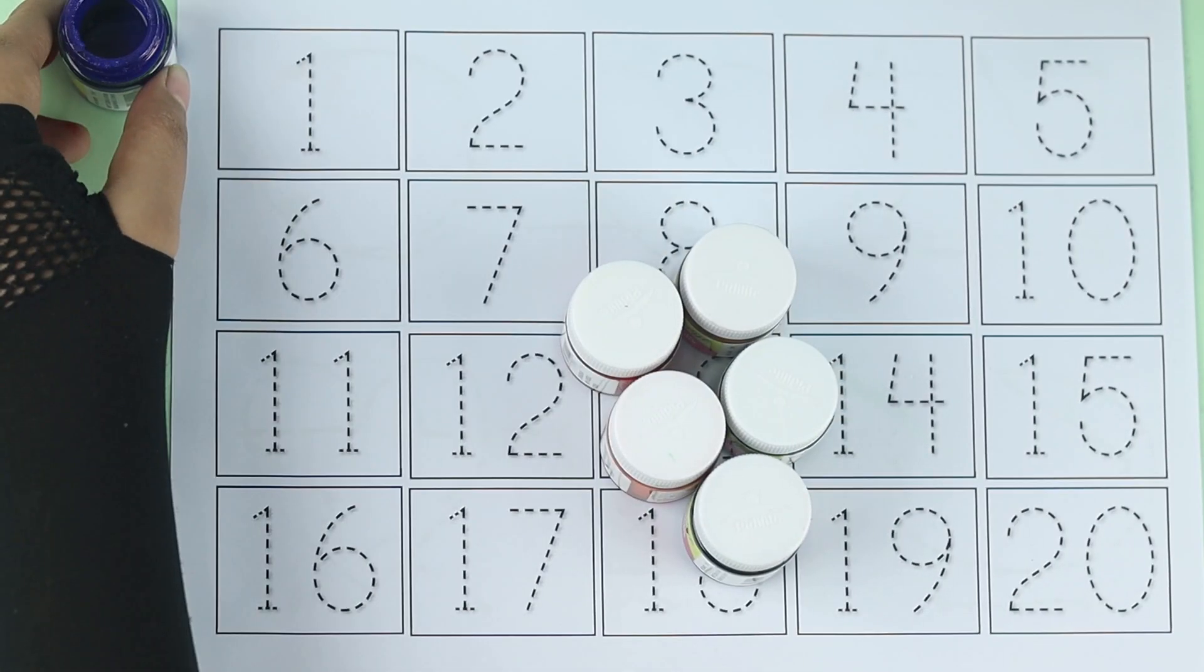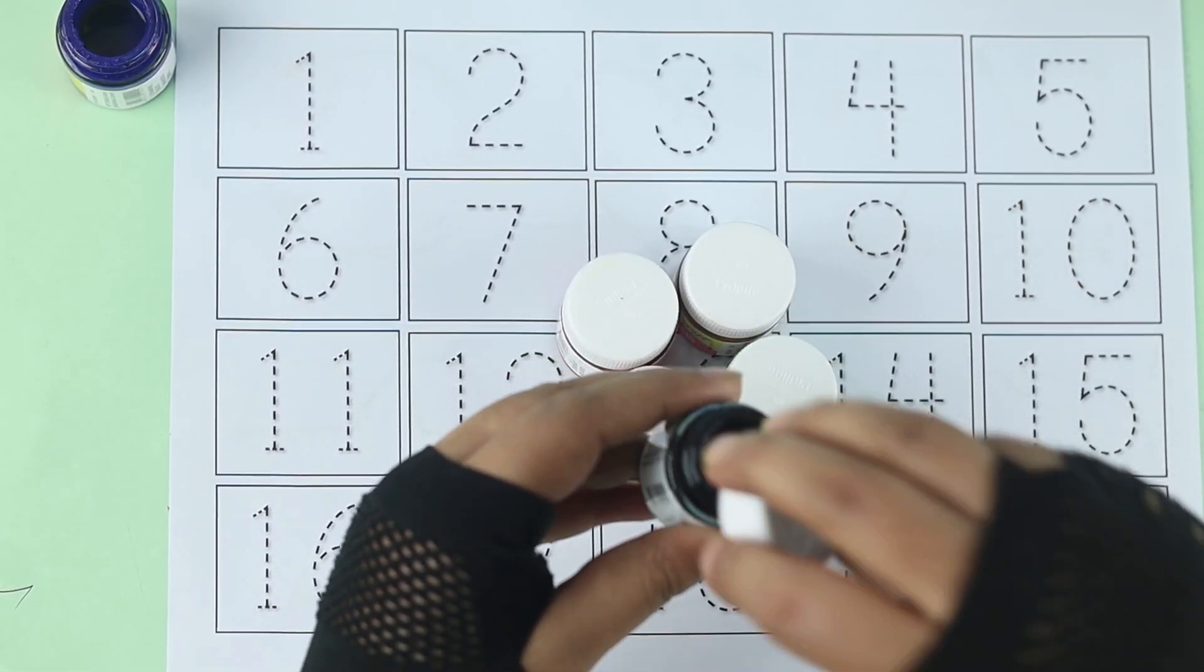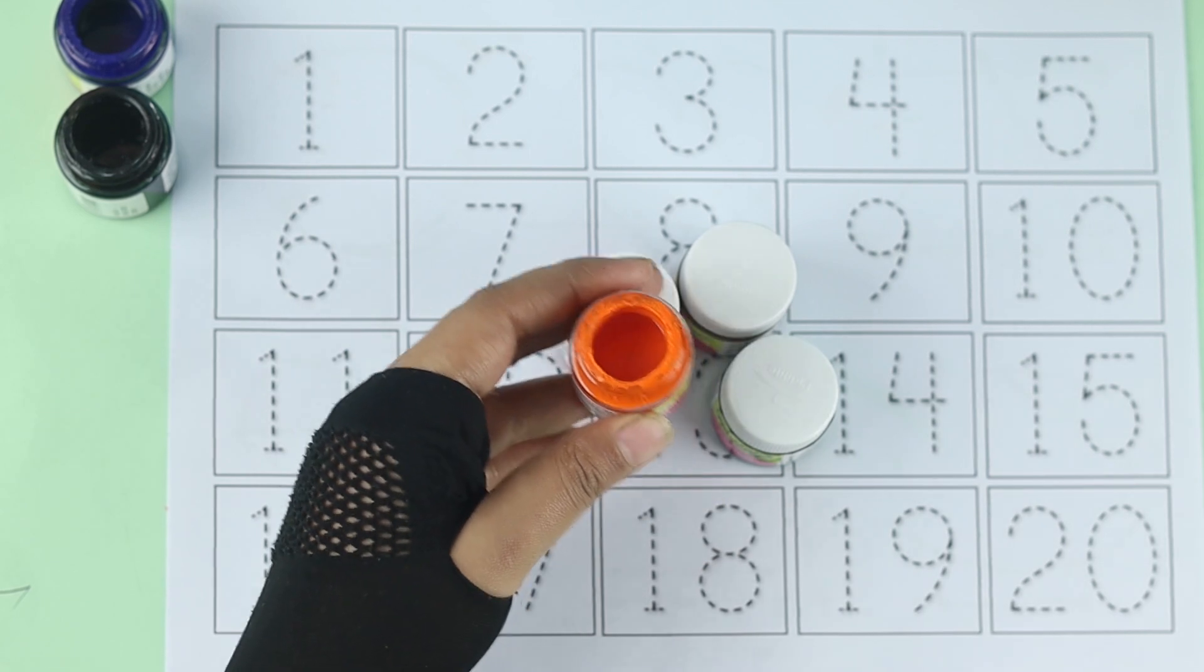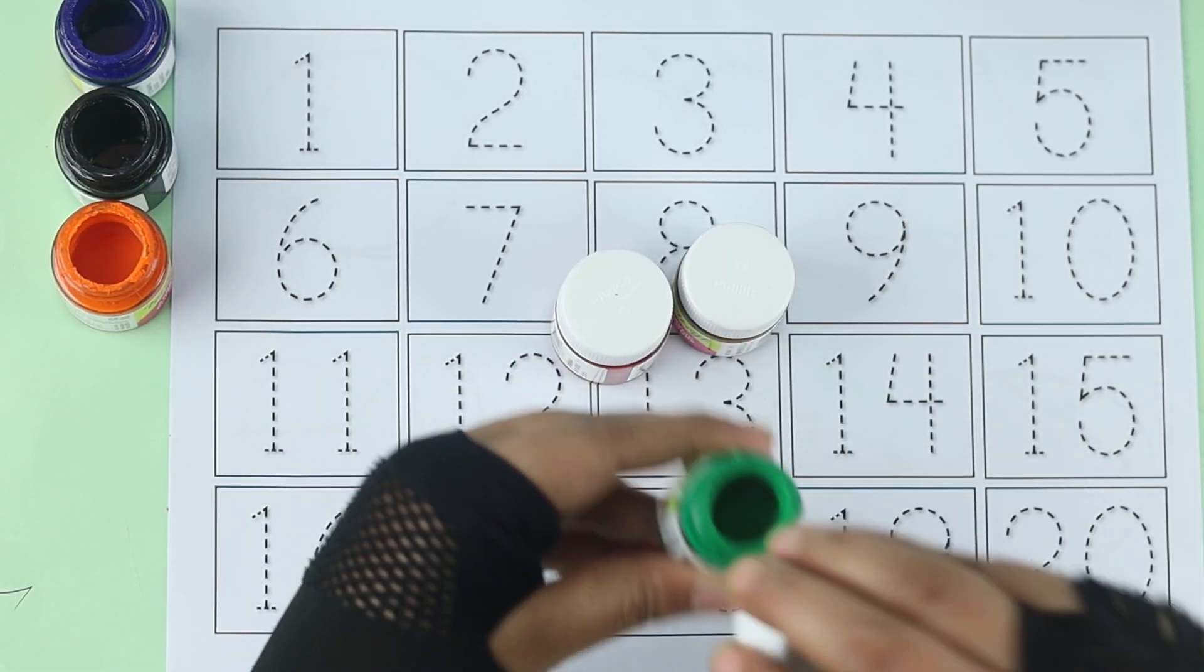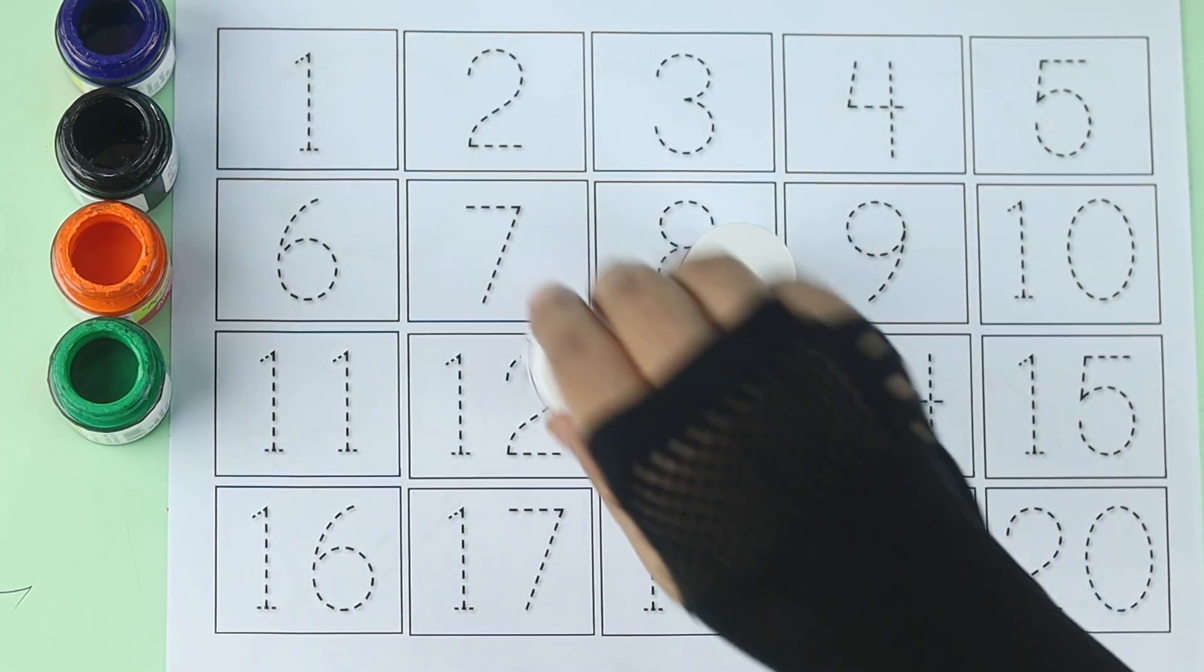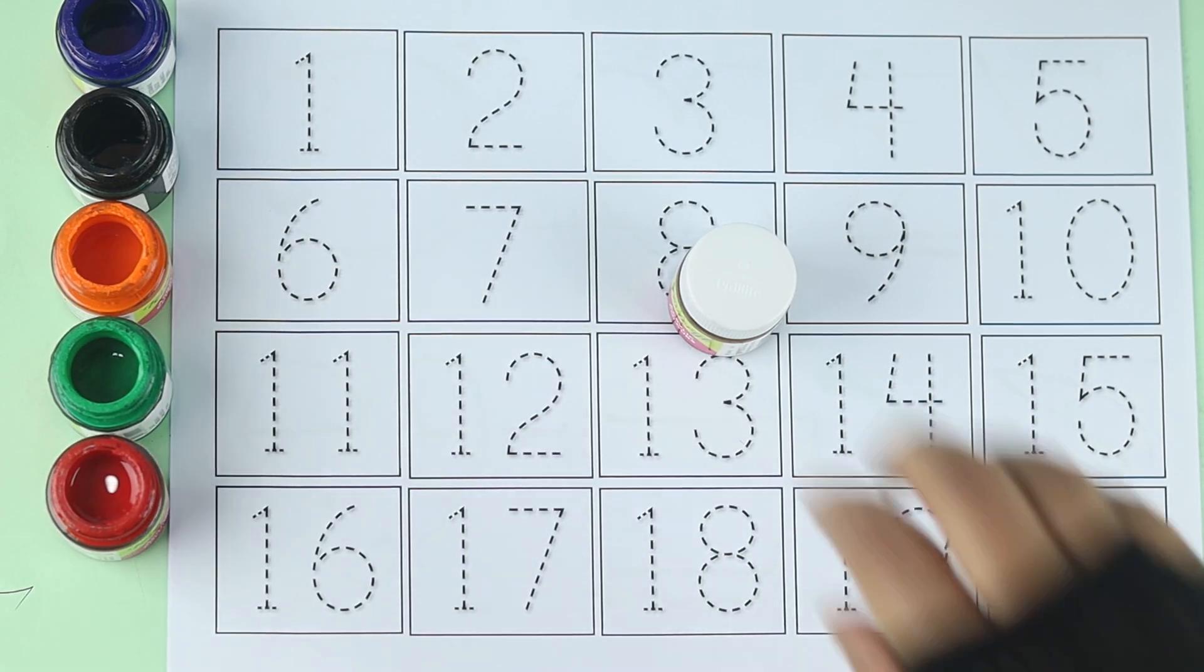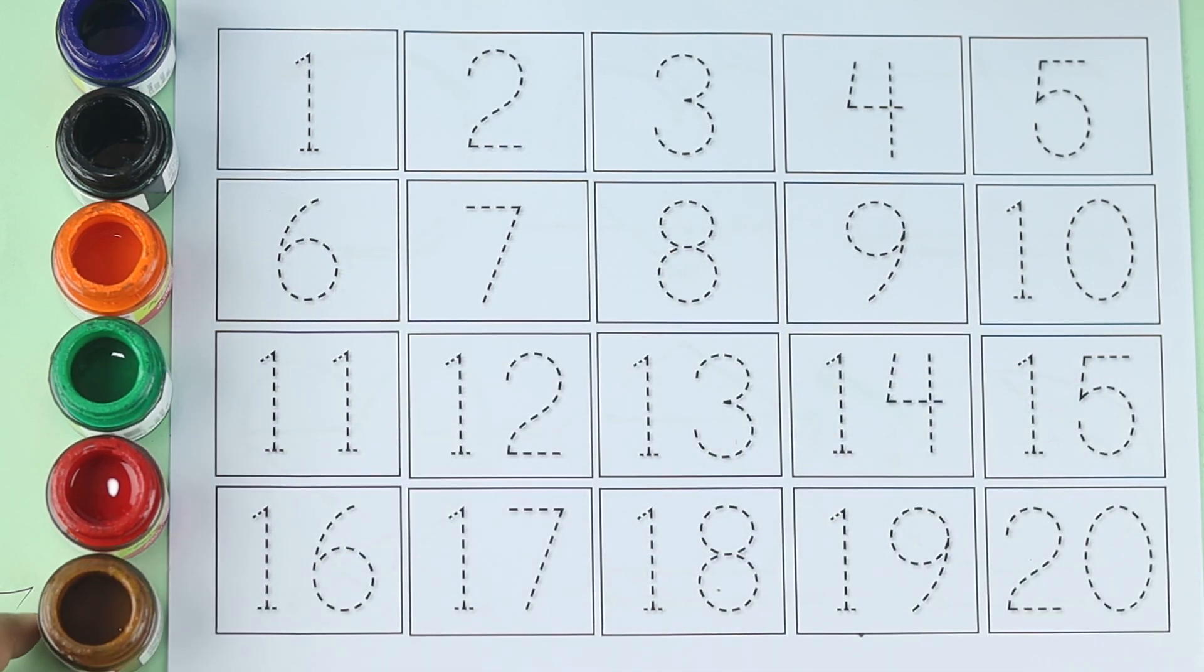Blue color, blue color. Black color, black color. Orange color, orange color. Green color, green color. Red color, red color. Brown color, brown color.